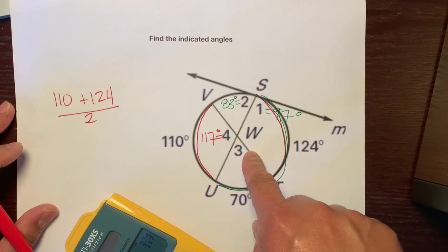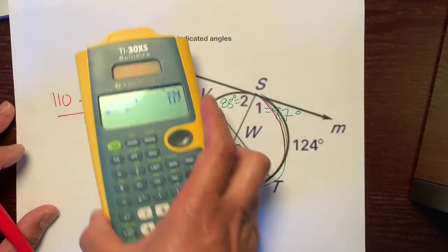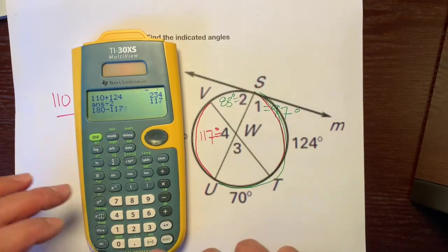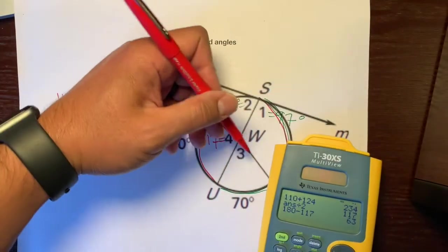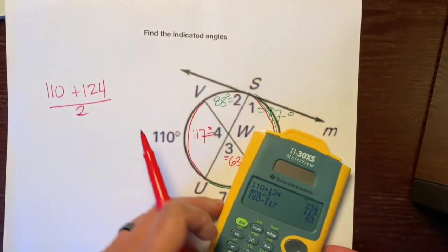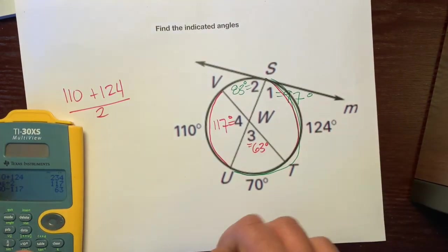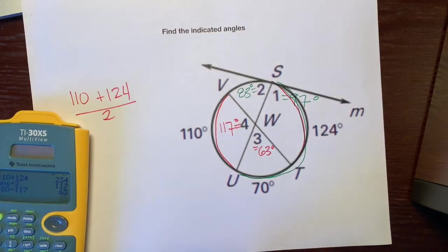And look at that, angle three is supplementary to angle four. This is why we waited for angle three to be last. So we're going to take our calculator and do 180 minus 117 and angle three is 63 degrees. And there you go. That's how you figure out the four indicated angles. Not too bad. Alright, have a great day. Bye.